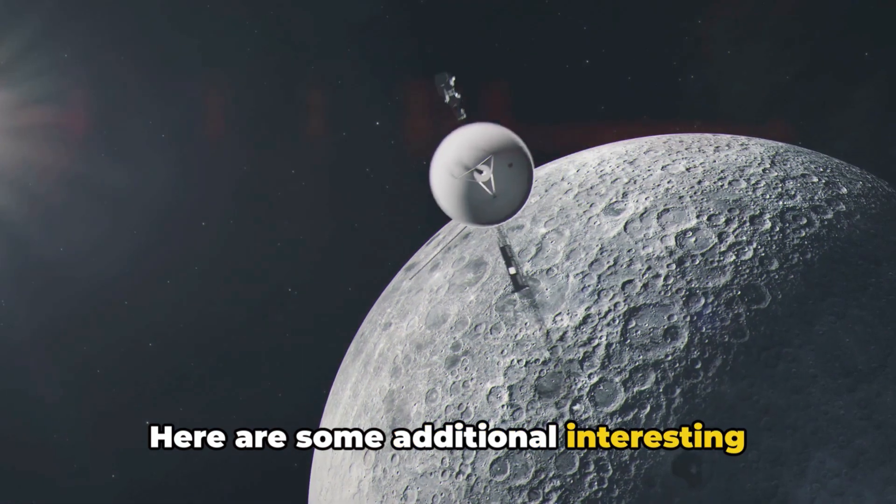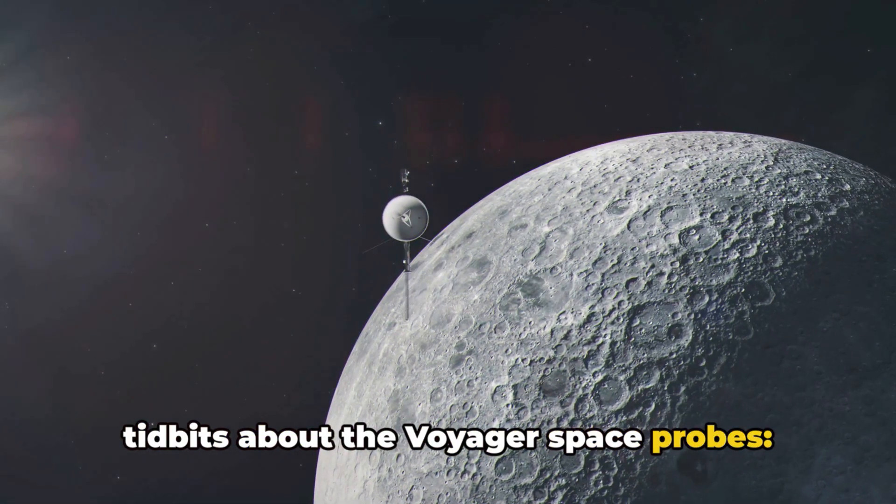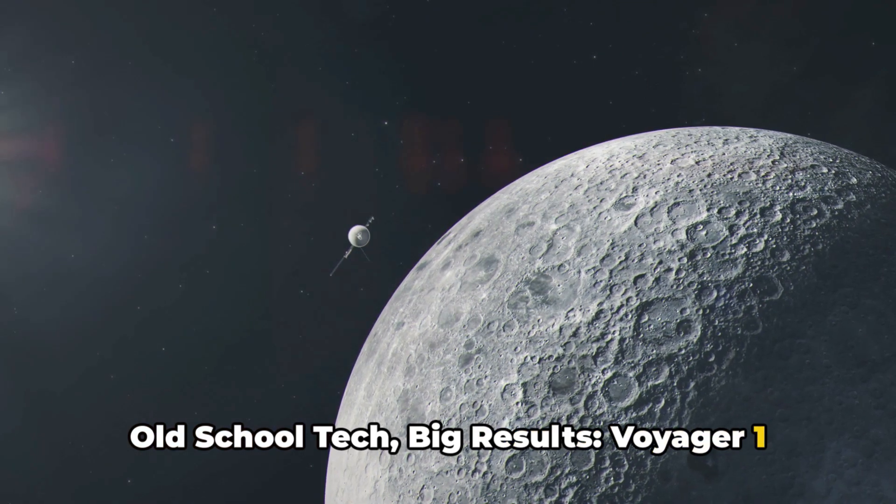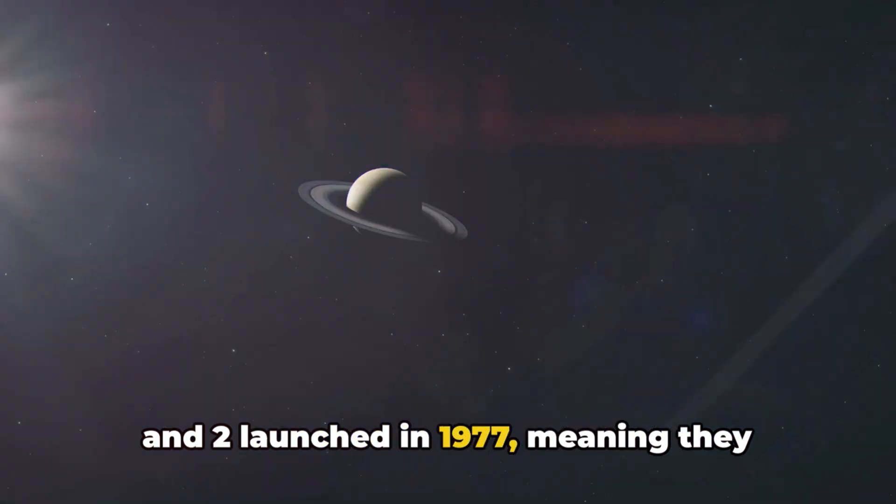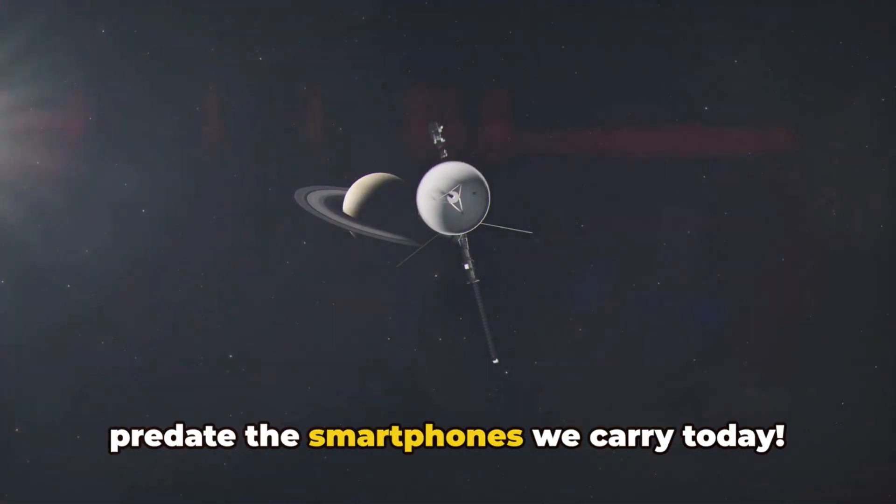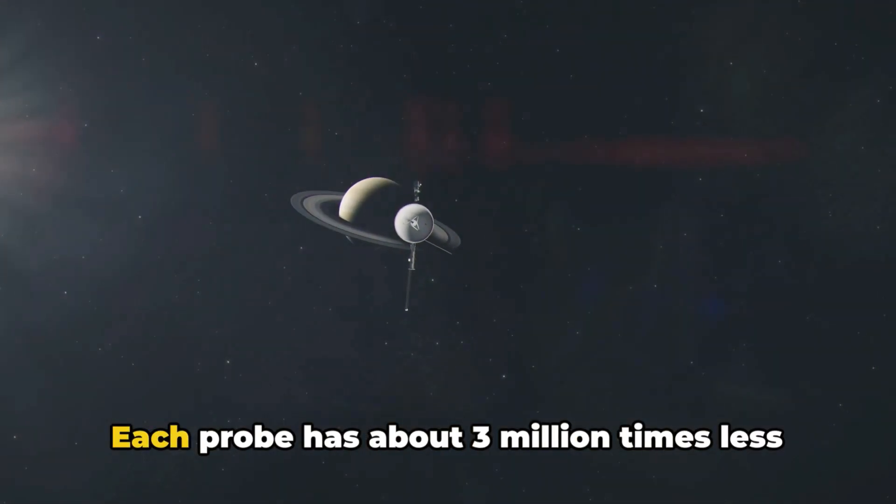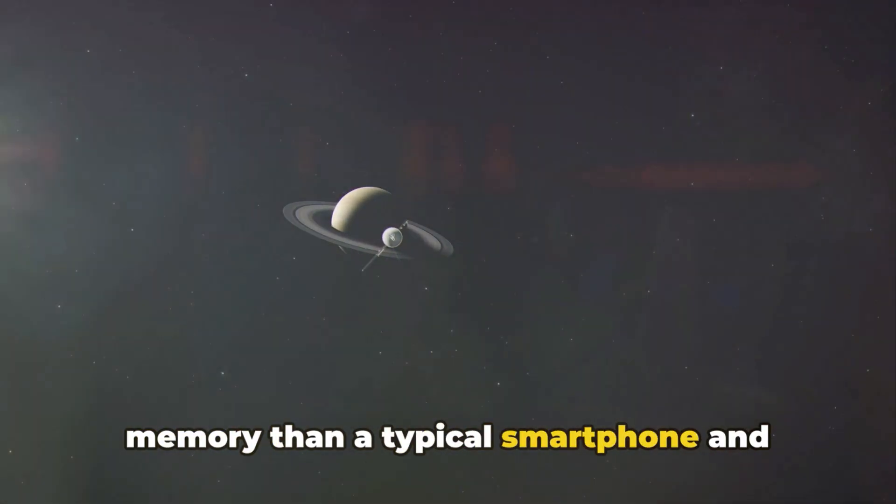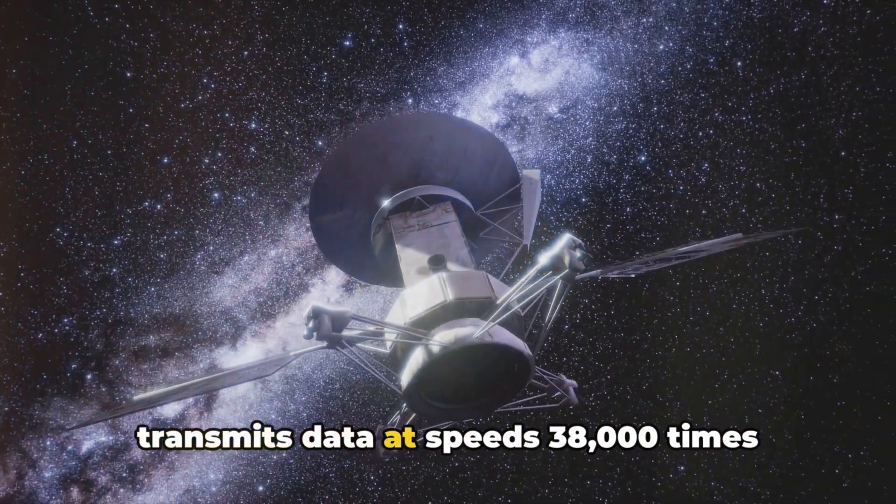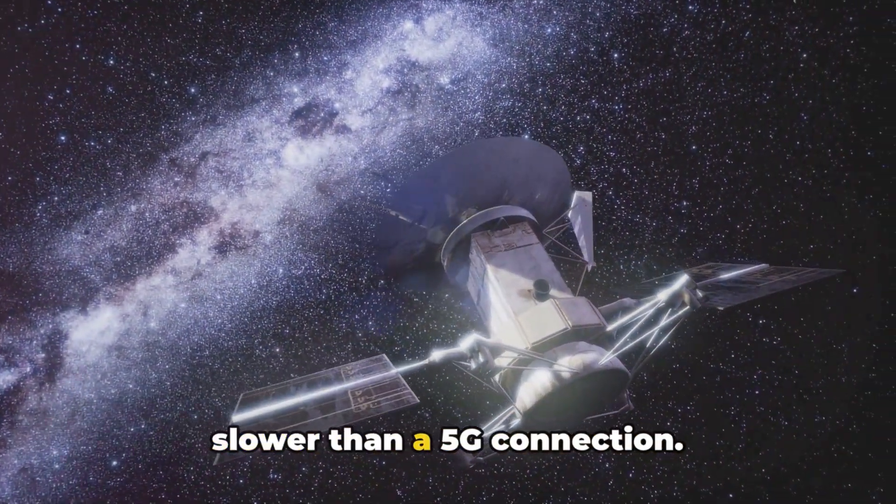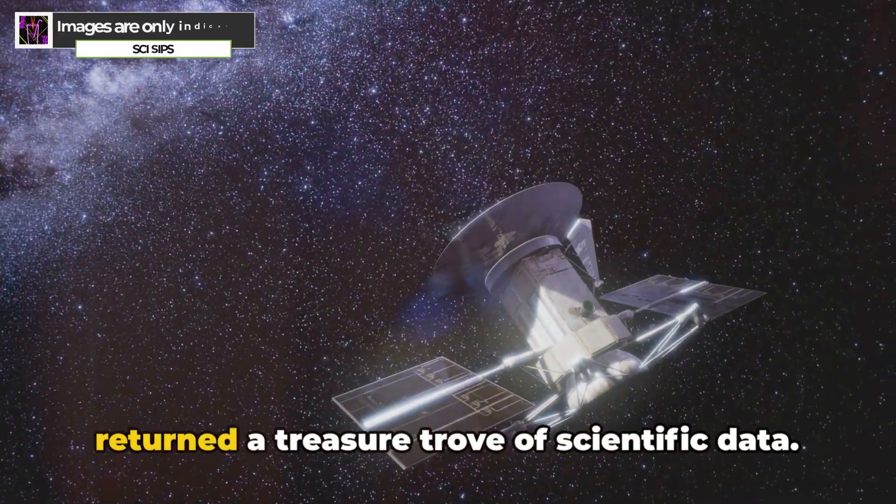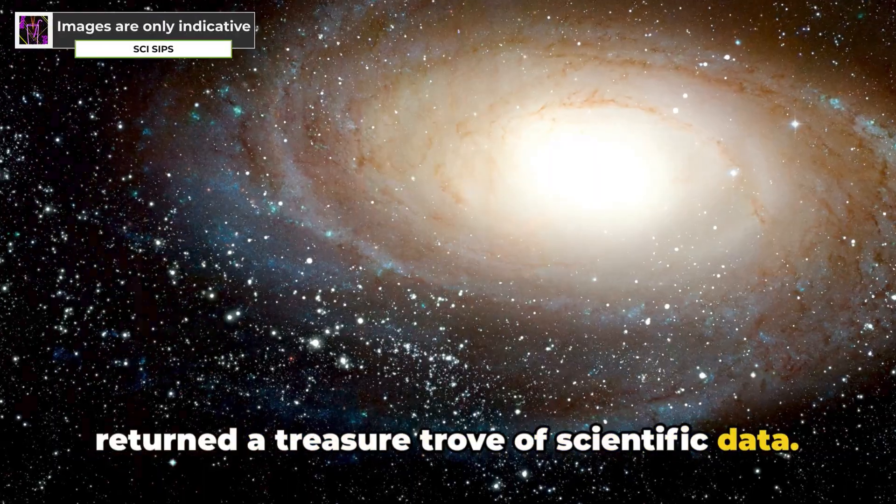Here are some additional interesting tidbits about the Voyager space probes. Old school tech, big results. Voyager 1 and 2 launched in 1977, meaning they predate the smartphones we carry today. Each probe has about 3 million times less memory than a typical smartphone and transmits data at speeds 38,000 times slower than a 5G connection. Despite these limitations, they've returned a treasure trove of scientific data.